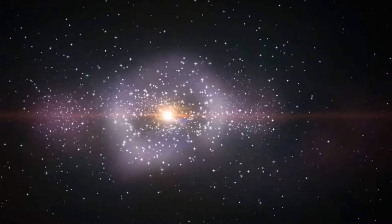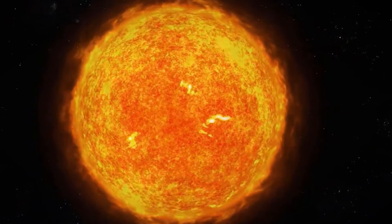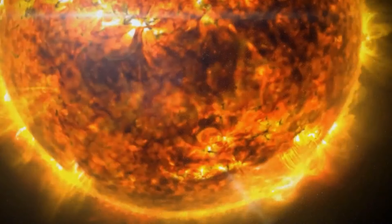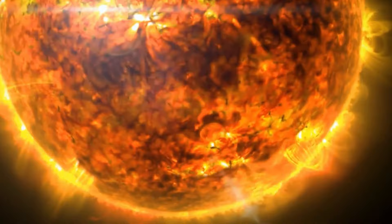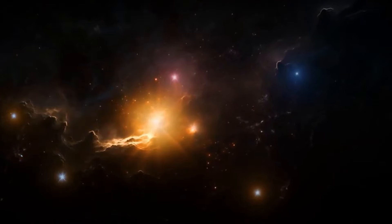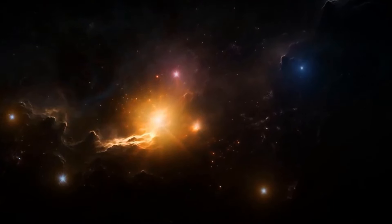The bigger the star, the faster it burns through its hydrogen fuel and the shorter its life will be. Stars like our Sun last around 10 billion years. Smaller ones, about a tenth the size of the Sun, can last over 100 times longer, like a trillion years. They're practically immortal.